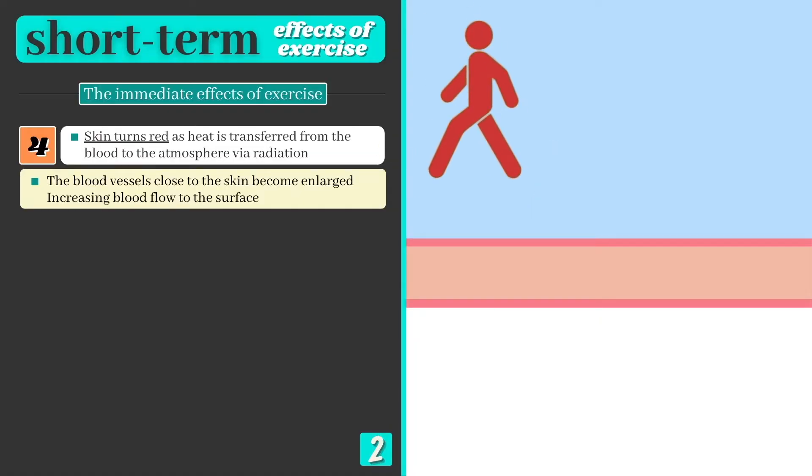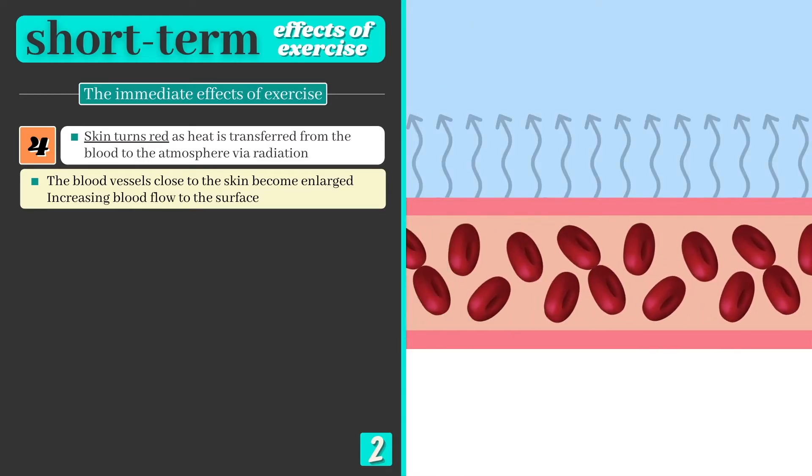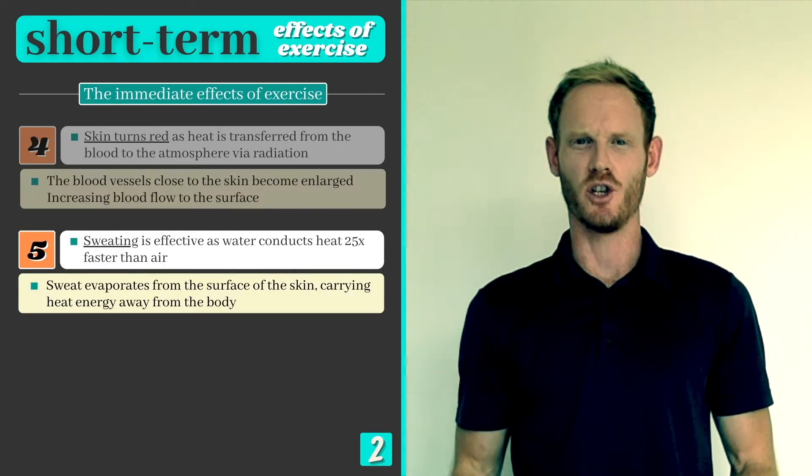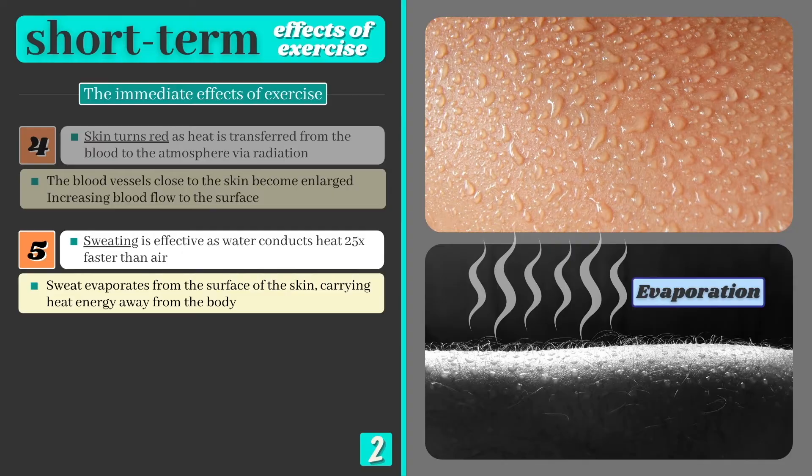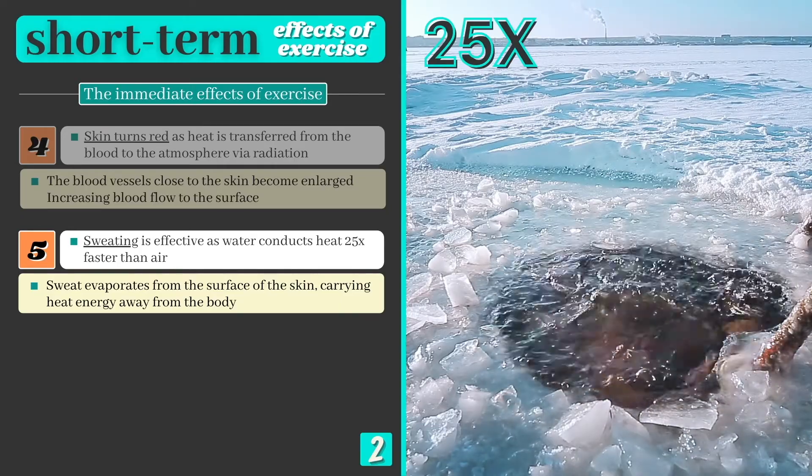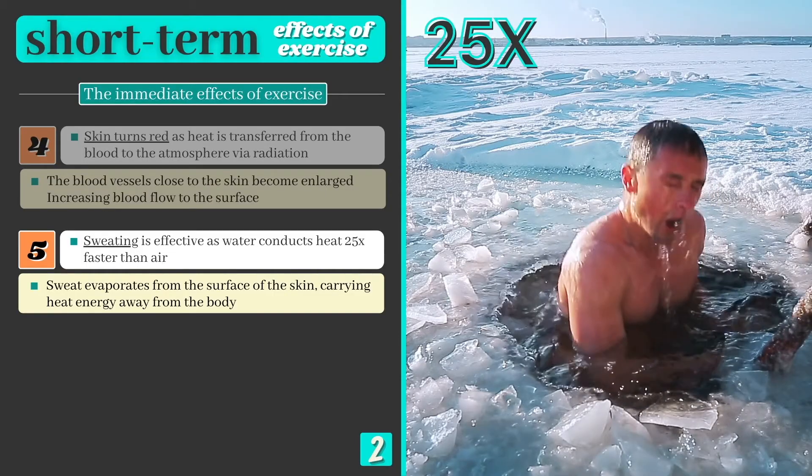Firstly, our skin turns red as blood vessels close to the skin become enlarged, allowing warm blood to flow to the surface and heat to be lost to the atmosphere through radiation. We also start producing sweat which evaporates from the surface of the skin, taking body heat with it. Sweating is particularly effective as water is actually 25 times better at conducting heat away from your body than air, hence why you feel so cold when stepping out of a swimming pool.